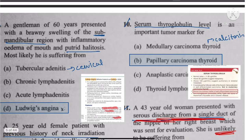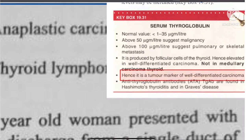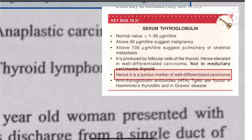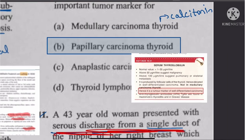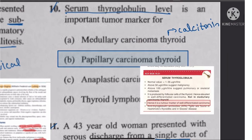Question 10: Serum thyroglobulin is an important tumor marker. It is the tumor marker for all well-differentiated thyroid cancers. The answer is not medullary carcinoma because the marker for medullary carcinoma is calcitonin. So the answer for question 10 is papillary carcinoma.